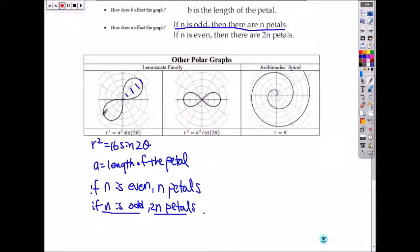And if it's diagonal, it's sine. If it starts on the x-axis or polar axis, it is cosine. And the spiral is r equals to theta, and it looks like a spiral.